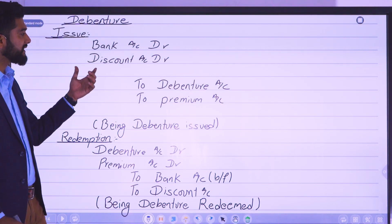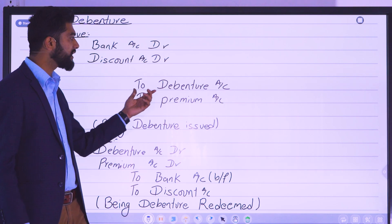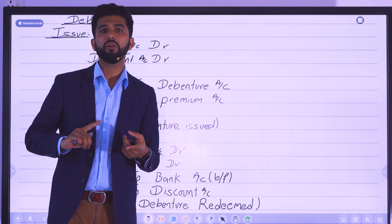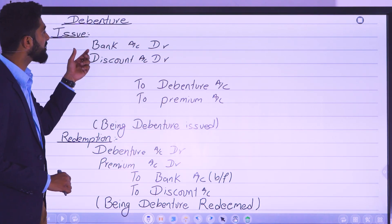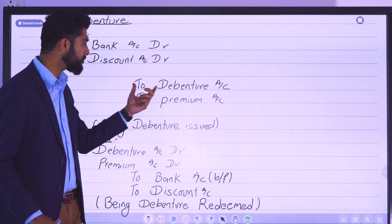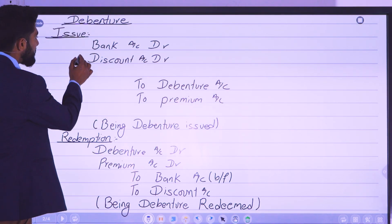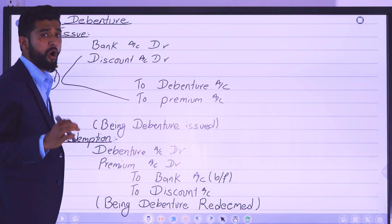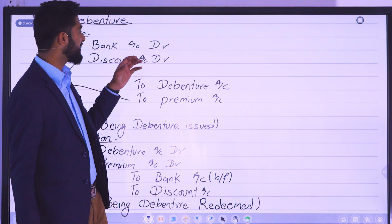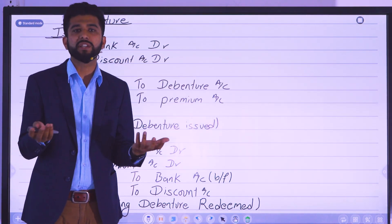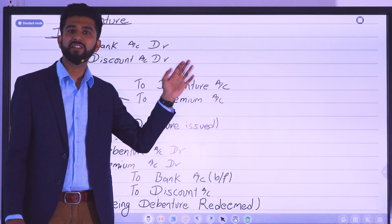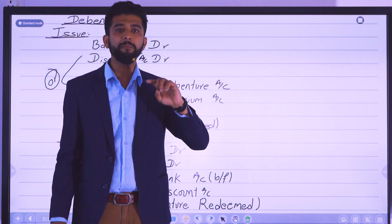For the journal entry at issue: Bank account debit, Discount on Debentures debit, Debentures account credit, Premium on Debentures credit. Entry: Bank debit, Debentures discount debit, premium credit. Discount debit, premium credit.